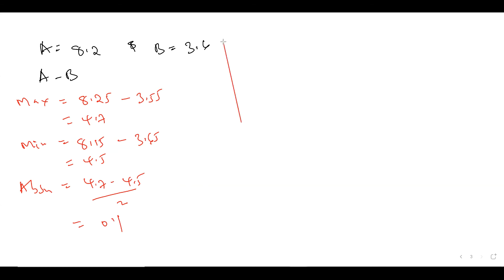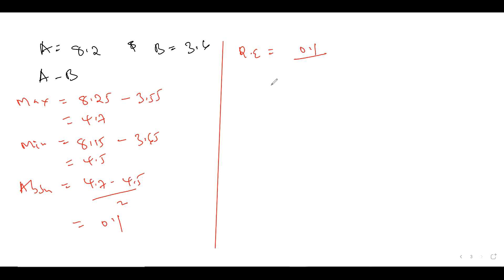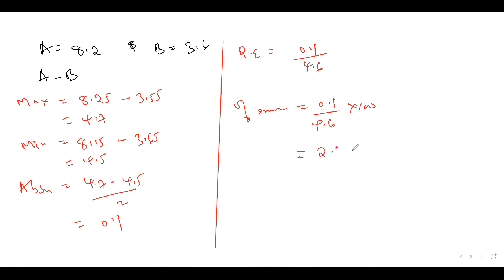For the same operation, in case they asked for relative error: by now you should know that relative error in any operation is given by the absolute of that operation over the actual value. So relative error will be absolute (0.1) over actual — actual is 8.2 minus 3.6, which is 4.6. If they ask for the percentage error, it will be absolute over actual times 100, which gives roughly 2.17%.